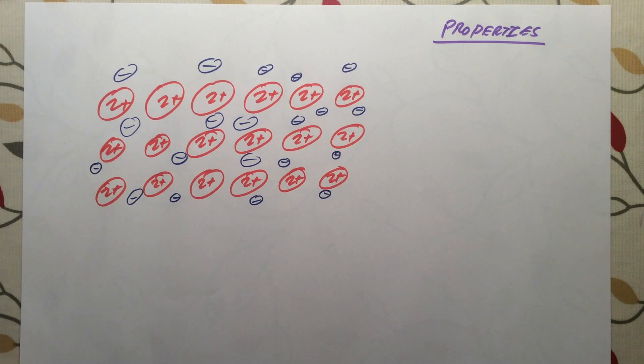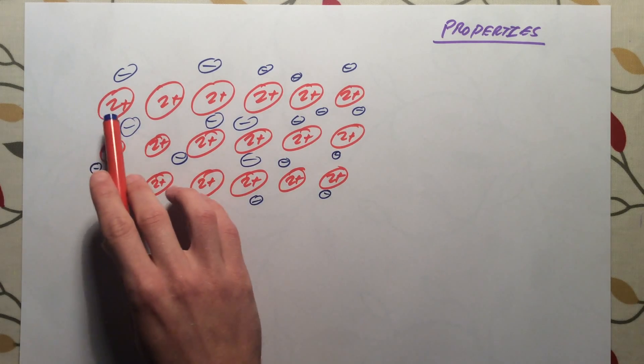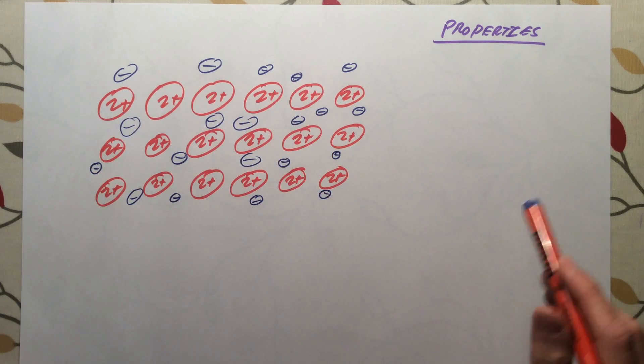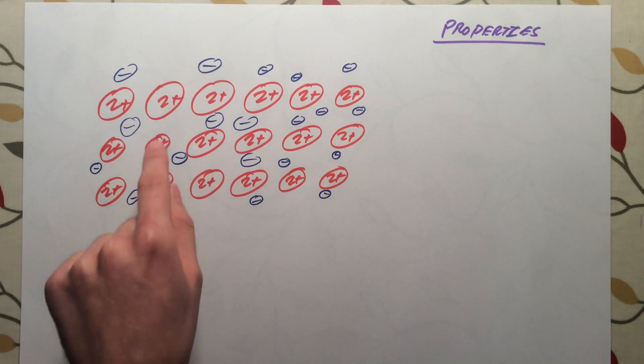Since all metals have this same arrangement of a regular array of positive ions surrounded by a sea of delocalized electrons, all metals have certain properties in common. And the first one is that they're all good conductors of electricity. Now, in order for a current to flow, there must be charged particles that are able to move, and in a metal we have those.